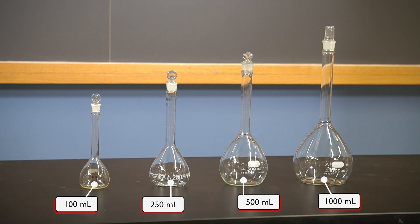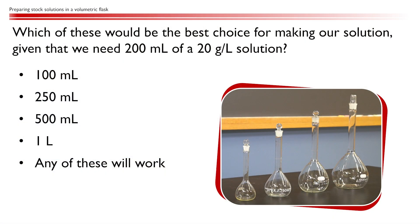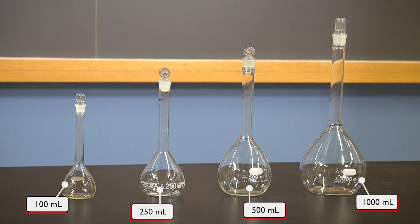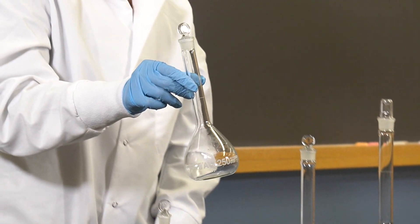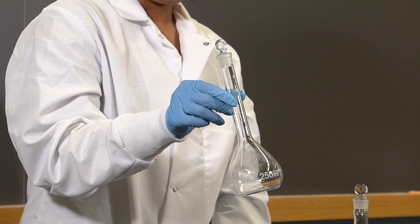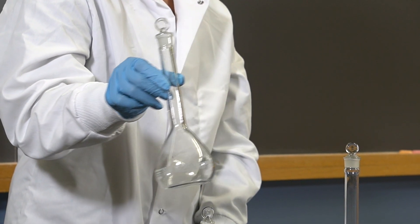In our lab, we have several volumes of flasks available. Which of these would be the best choice for making our solution, given that we need 200 milliliters of a 20 grams per liter solution? Whenever we're making solutions, we never want to make it more than once if possible. So the 100 milliliter flask is not ideal. But we also love our planet and don't want to make any extra waste. So the 250 milliliter flask is our best choice. It will make more than what we need, but with the least amount of extra waste.